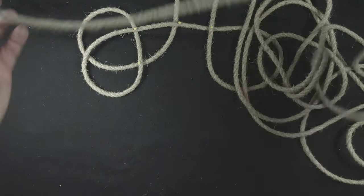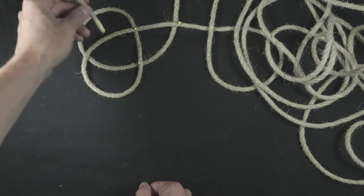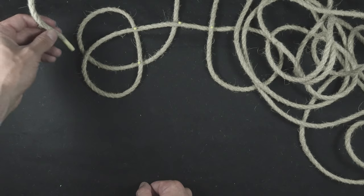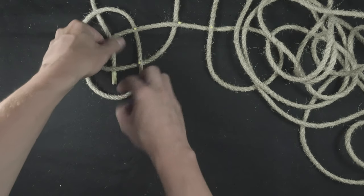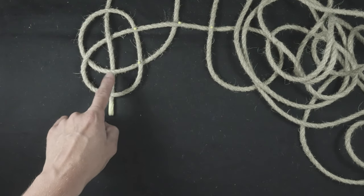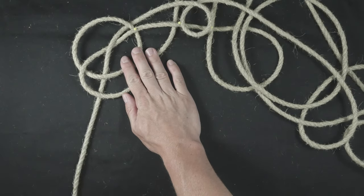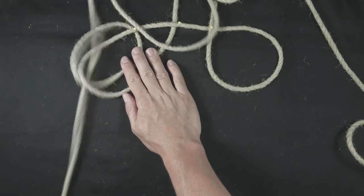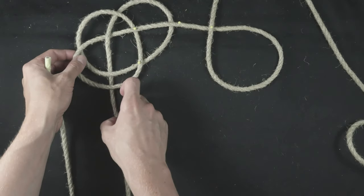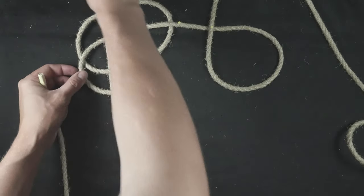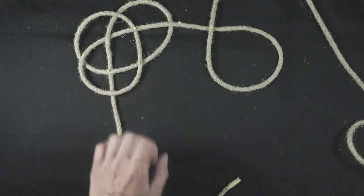Then, weave through these four strands: under, over, under. So under, over, and under two. This completes the top left corner of the mat.